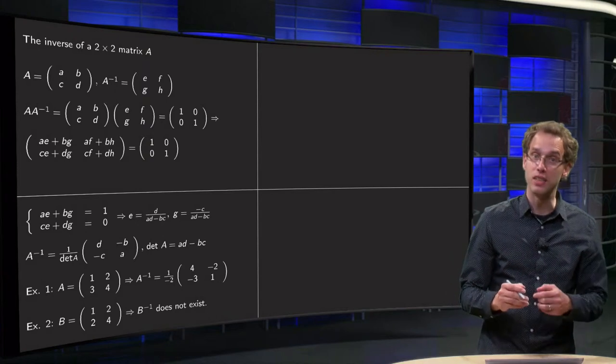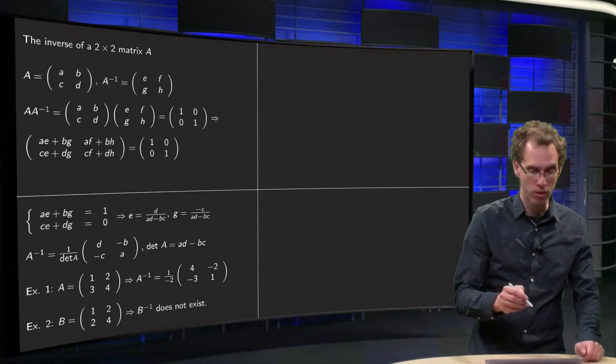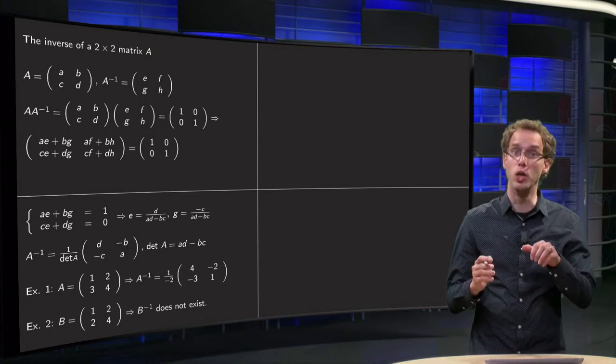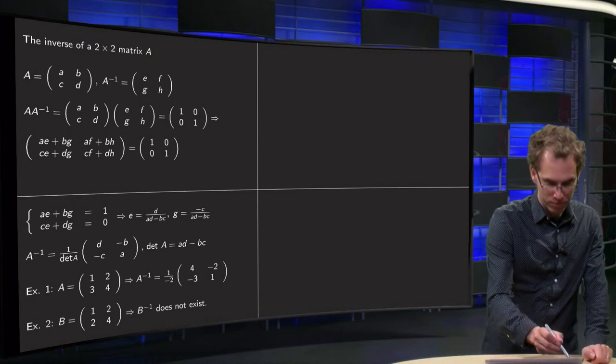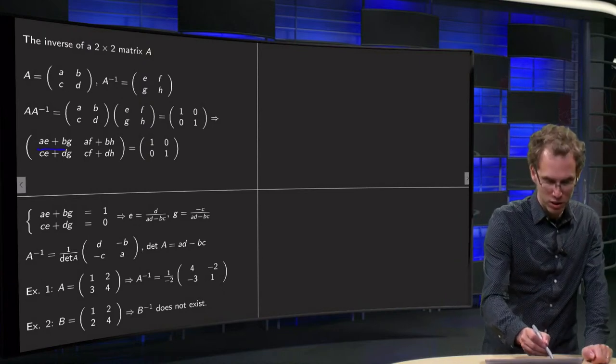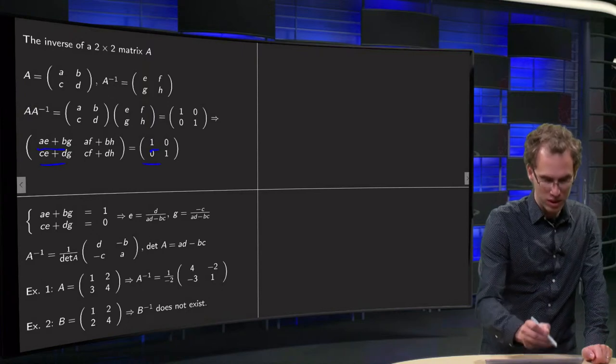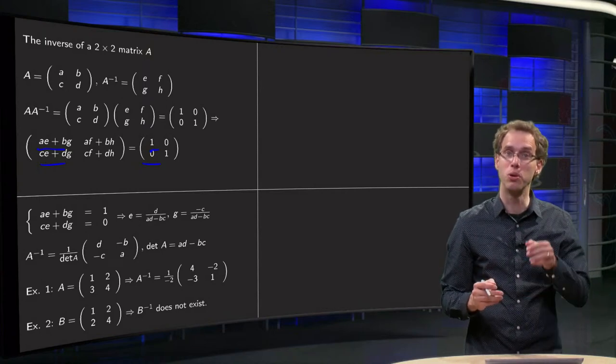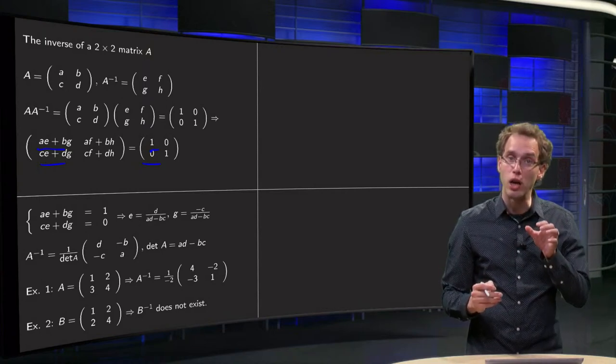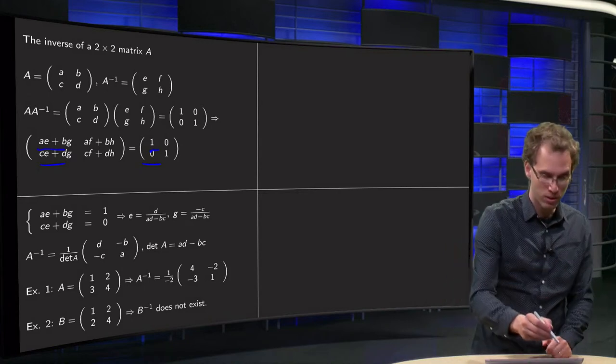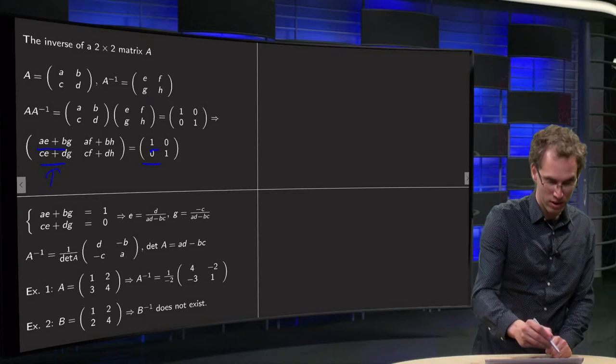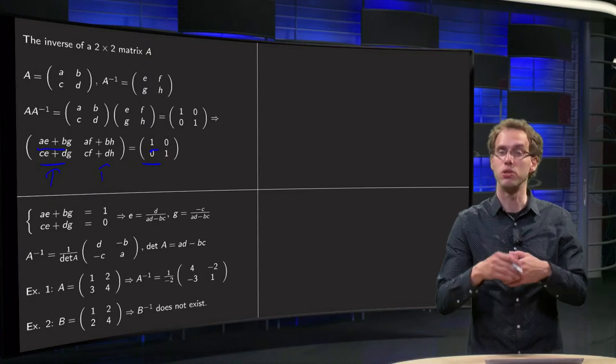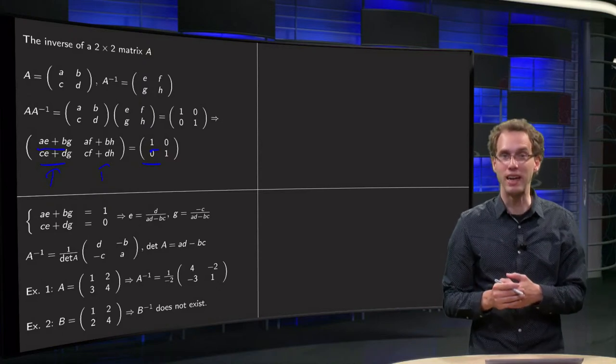So what we get is a linear system of 4 equations with 4 unknowns. Because now, a, b and c and d are knowns here, e, f, g and h. And for example, ae plus bg has to be equal to 1, and ce plus dg has to be equal to 0. Fortunately, our system of 4 equations and 4 unknowns splits into 2 systems of 2 equations and 2 unknowns, because the e and the g only are over there, and the unknowns f and h are only over there. So, I can first solve for e and g, and then do the same trick, solve for f and h.